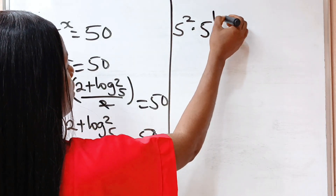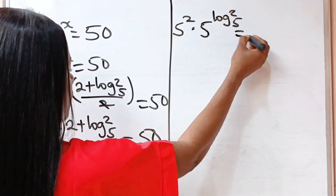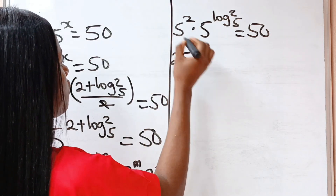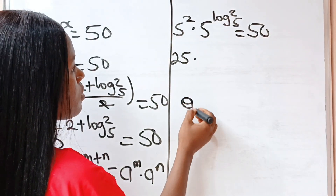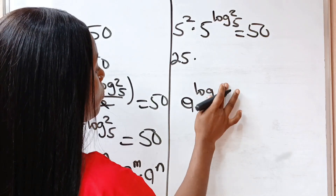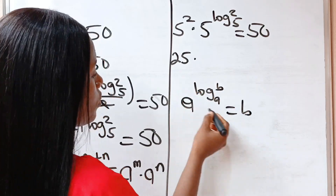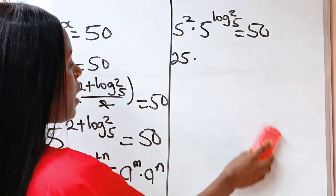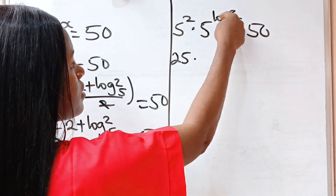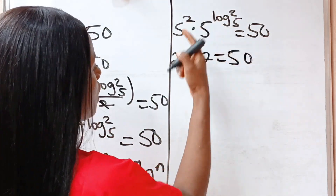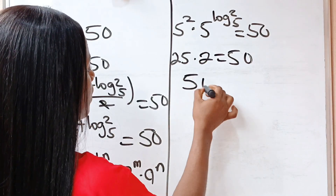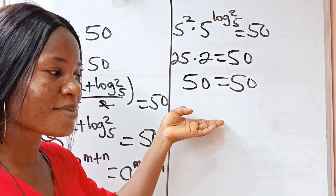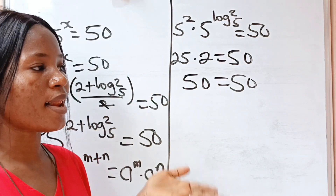Now, 5 to the power of 2 is 25. And when you have a to the power of log base a of b, this equals b. So 5 to the power of log base 5 of 2 equals 2. That gives us 25 multiplied by 2 is equal to 50, and 50 equals 50. This proves that the answer we got is correct. Thank you so much for watching — see you in my next video, bye!